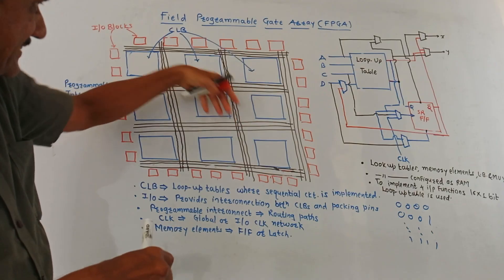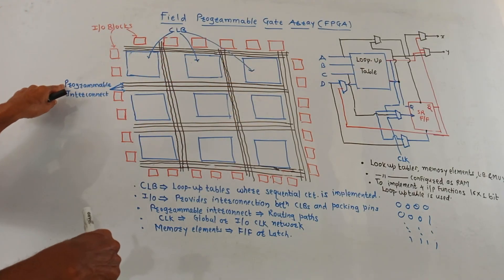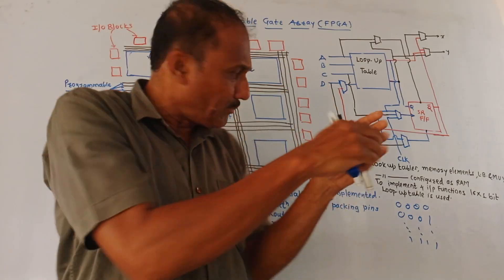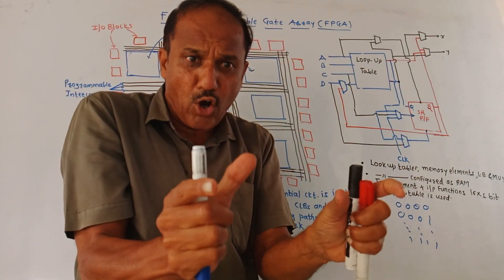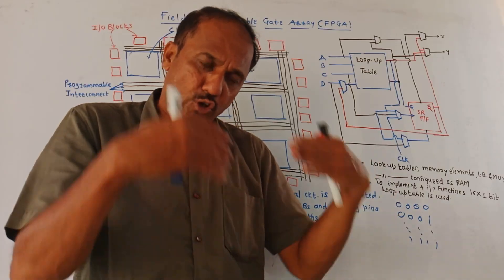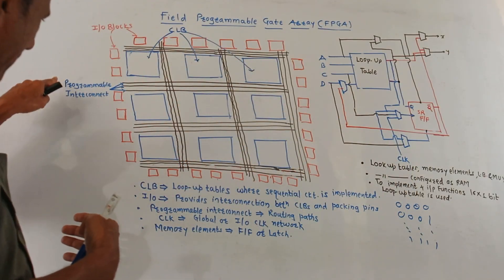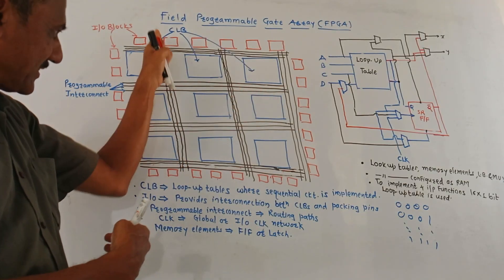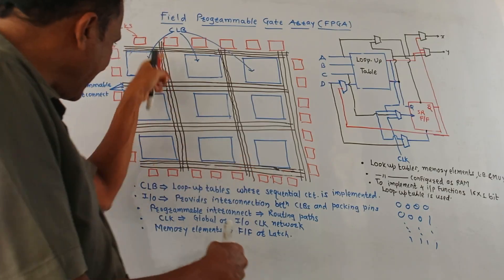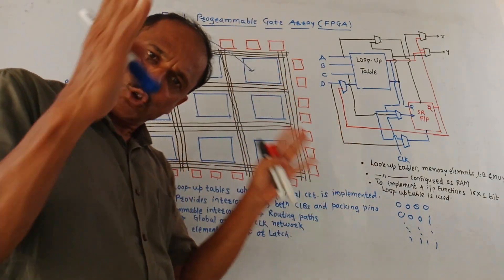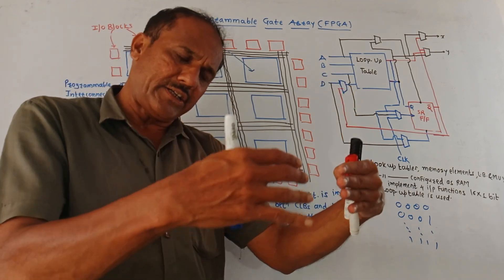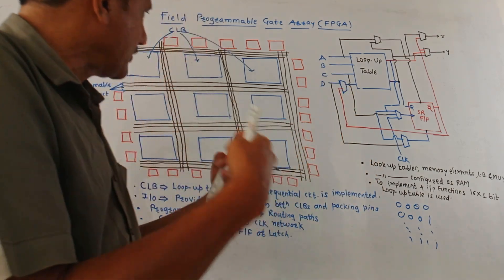Certain vertical lines and certain horizontal lines are shown. These are called Programmable Interconnections. It is very simple to interconnect CLBs, that is Configuration Logic Blocks. CLB is the main block which is responsible for designing the required circuitry. To interconnect such CLBs to other blocks, these Programmable Interconnections are used, which are shown by horizontal lines as well as vertical lines. These horizontal lines are also called Horizontal Routing Path. Vertical lines are called Vertical Routing Path. Programmable Interconnection represents the routing path used to interconnect CLBs to different things.